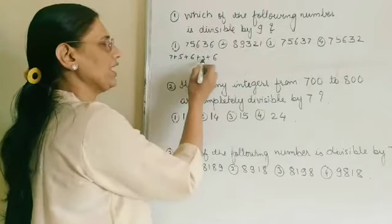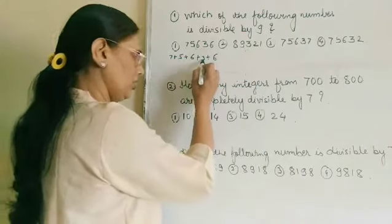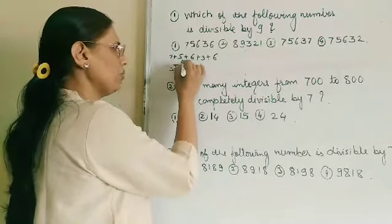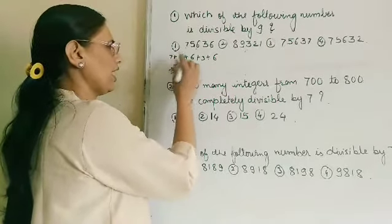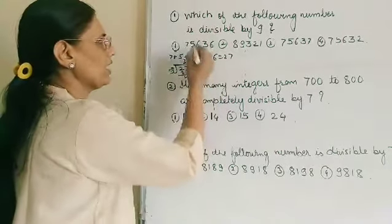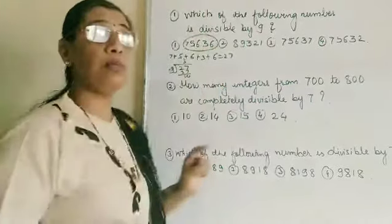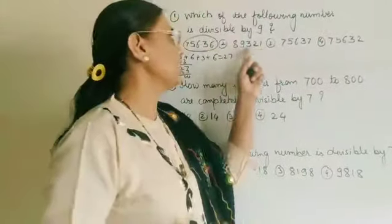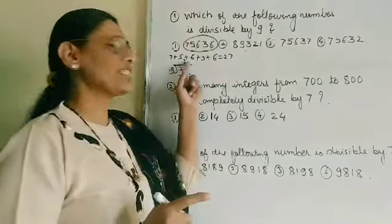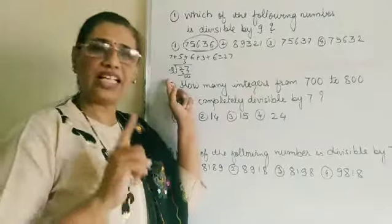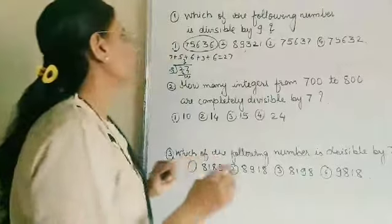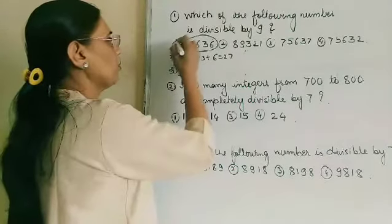For the first option: 7 plus 5 is 12, 12 plus 6 is 18, 18 plus 3 is 21, 21 plus 6 is 27. So 27 is divisible by 9 — 9 times 3 is 27 — exactly divisible by 9, and therefore we can say that this number is divisible by 9. Since the sum of the digits is divisible by 9, the whole number is divisible by 9. So the first option is correct.